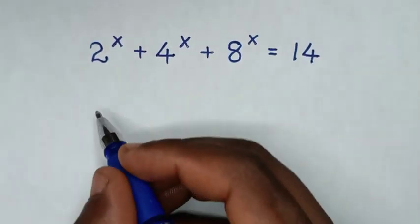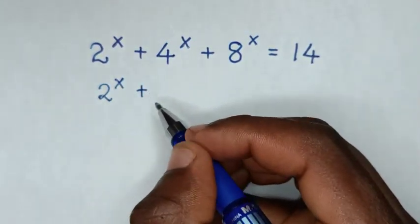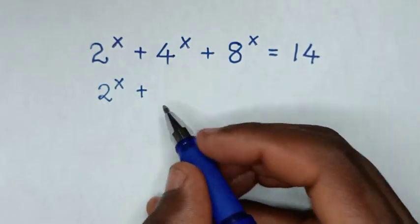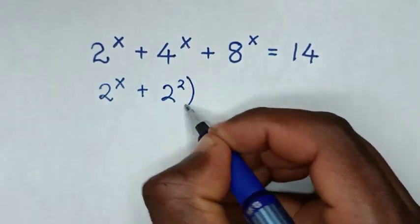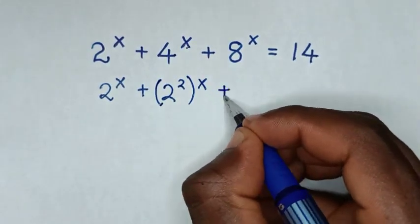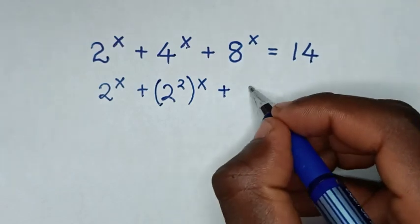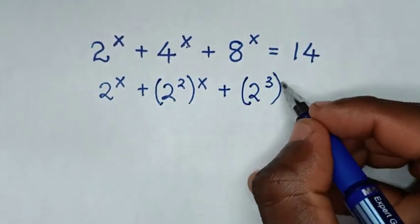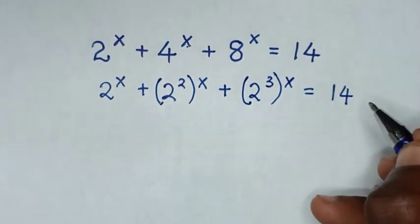we'll start with this: 2 power of x plus, for 4 to have the same base of 2, 4 is the same as 2 power of 2, then bracket power of x, plus 8 to have the same base of 2, 8 is the same as 2 power of 3, then bracket power of x is equal to 14.